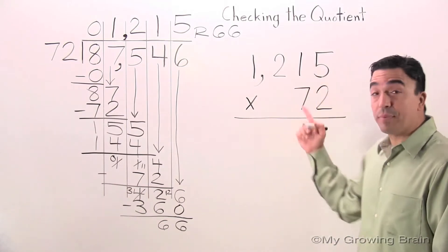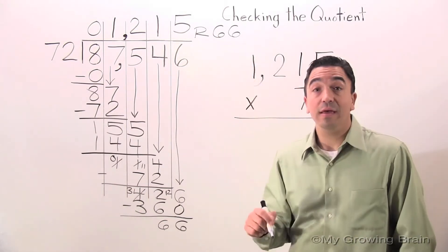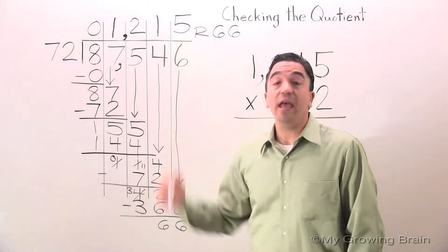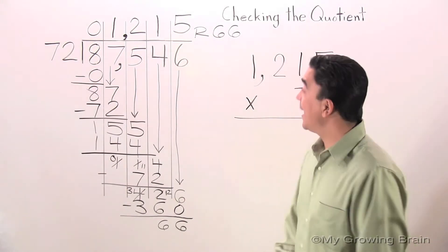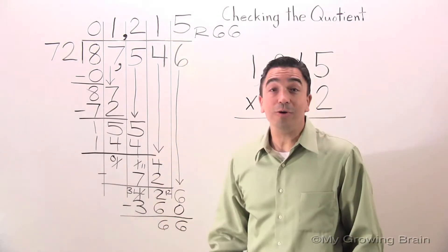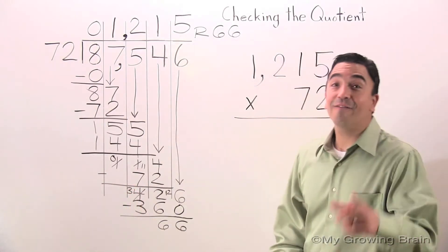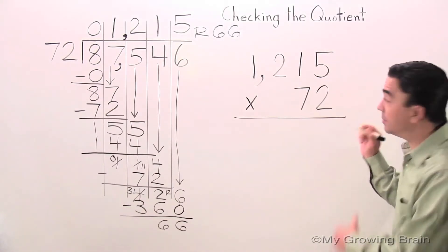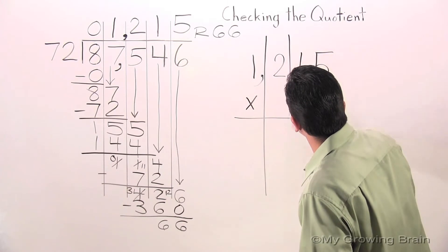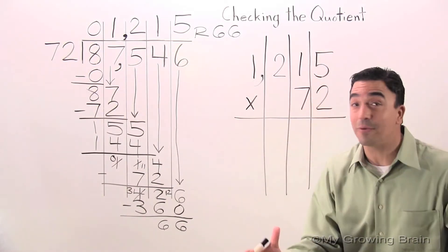Now, once I multiply this problem, I'm going to add the remainder to it. That should give us the dividend. And if that is all correct, then that means our quotient is correct. All right. First thing I want to do is organize my problem. I think we're ready to go.